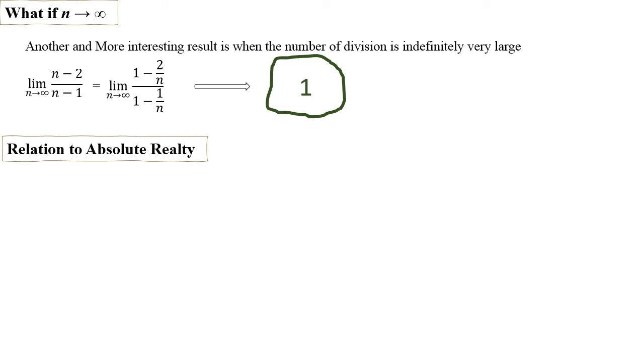Normally what we do is use L'Hôpital's rule, or simply divide the numerator and denominator by n. Then we can take the limit and get 1. So eventually you will get 1, which means 1 is left.